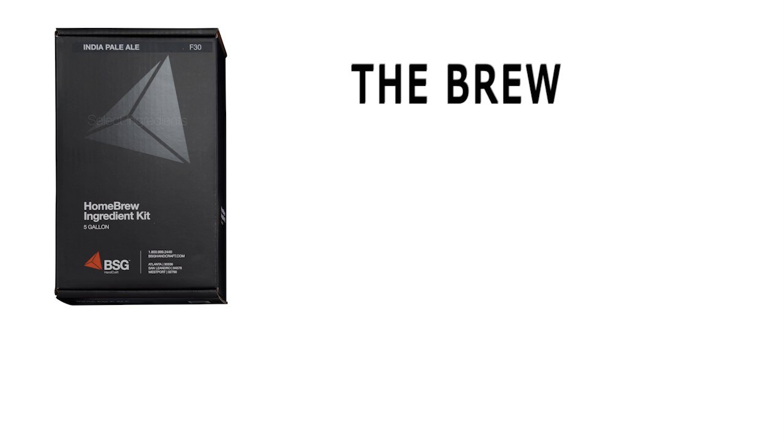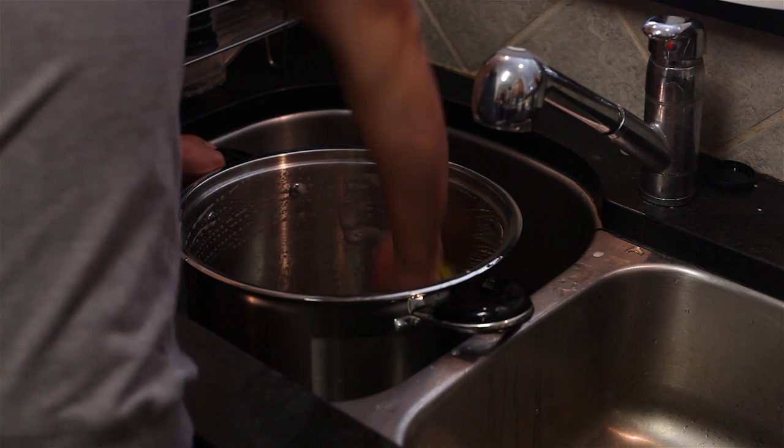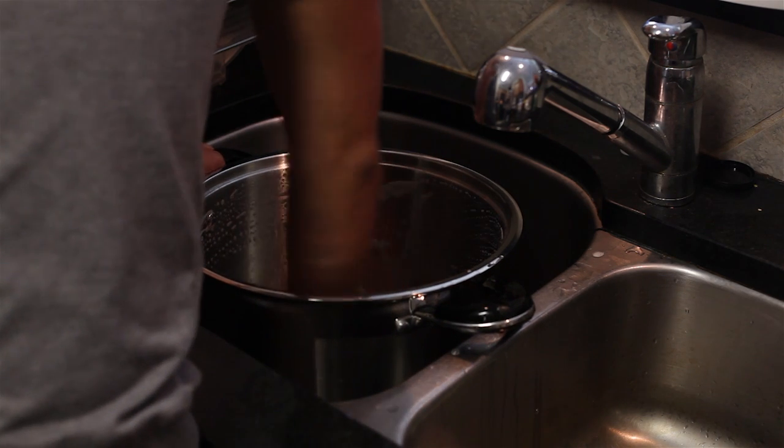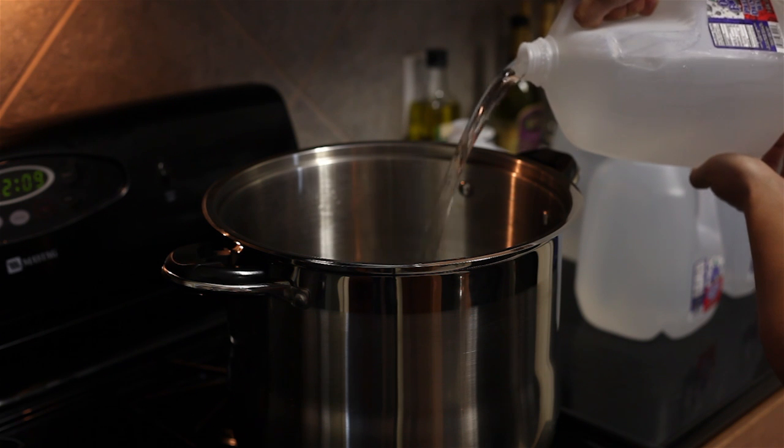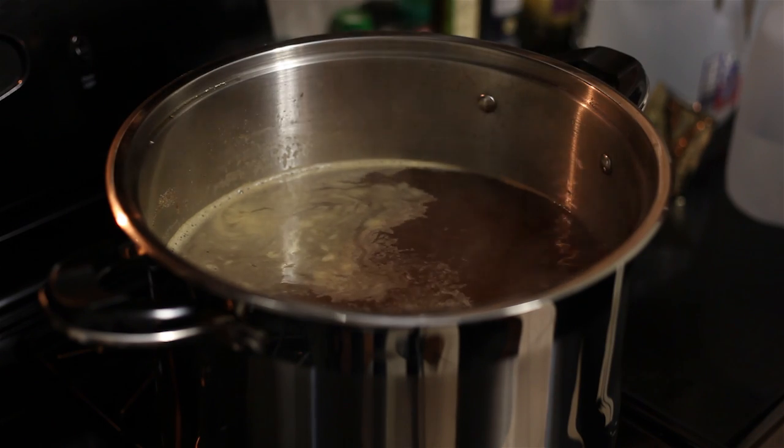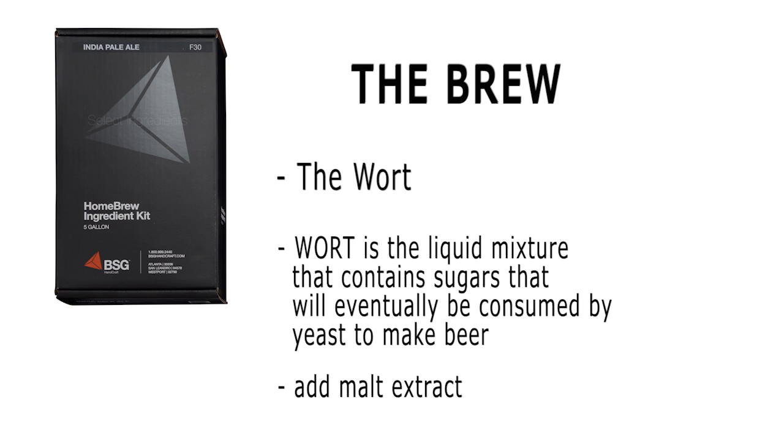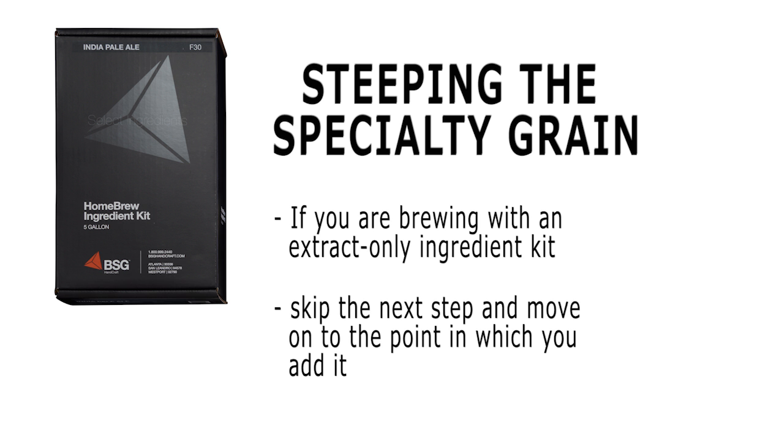The brew: This is the step in the homebrewing process where you'll make the wort. Wort is the liquid mixture that contains the sugars that will eventually be consumed by the yeast to make beer. First, clean and sanitize your stainless steel pot, and add 2-3 gallons of water, depending on the recipe. If you are brewing using only malt extract without any grain, bring the water to a boil, and then promptly remove it from the heat source. Next, you will want to add the malt extract. You can skip the next step and move on to the point in which you add it.